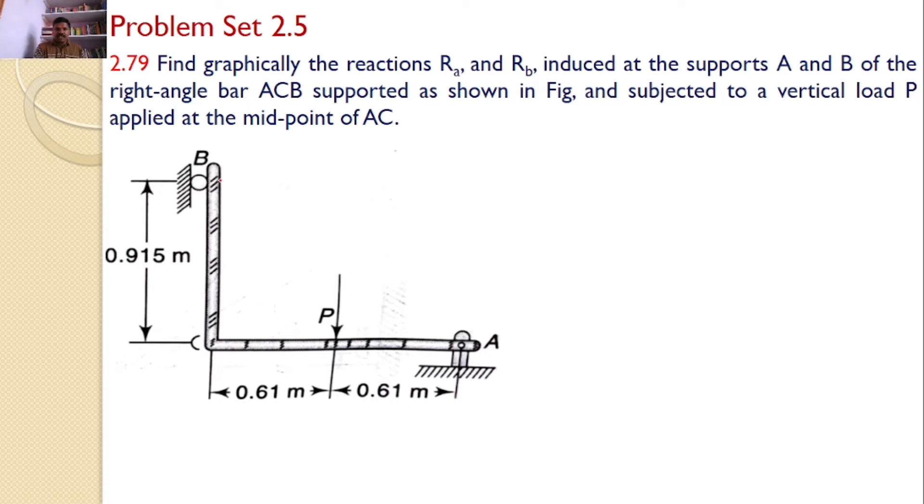Various forces acting on this right angled bar A, C, B are: There is a reaction force perpendicular to this surface, which is a horizontal force. I know the direction is horizontal but the magnitude is not known. There is a force P with magnitude P acting vertically. Both magnitude and direction are known. For Ra, neither magnitude nor direction are known. Both are unknown.